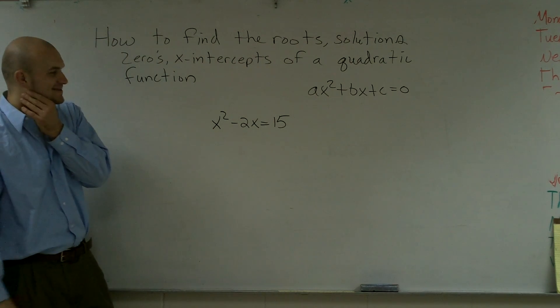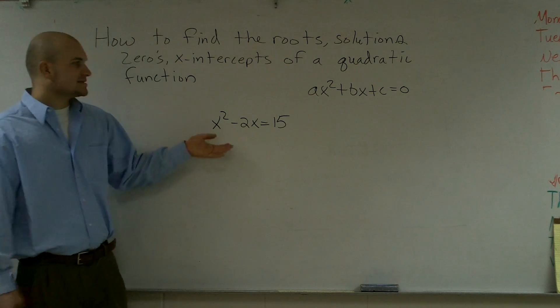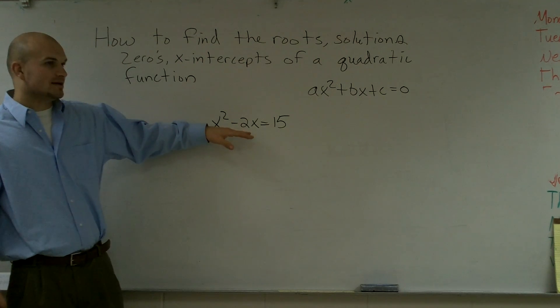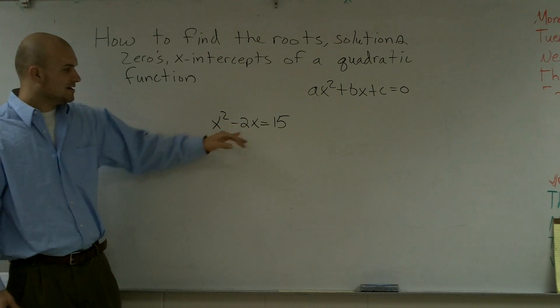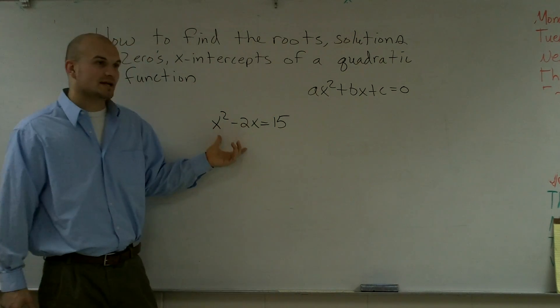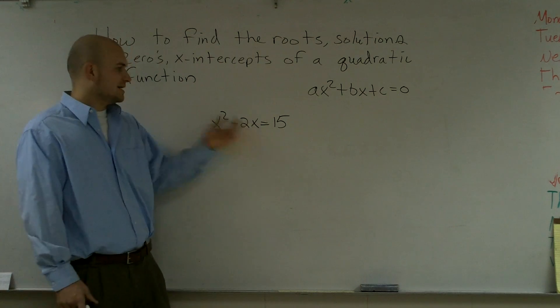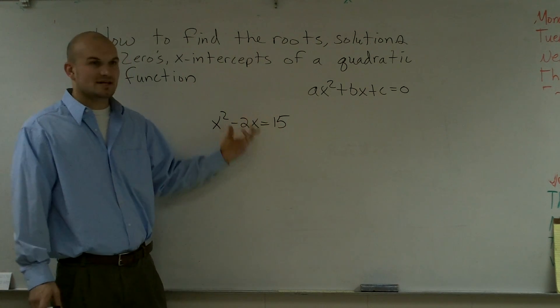So if we had x squared minus 2x equals 15, first thing I had to do if I'm going to factor this is, well, first of all, I see I could go ahead and take out an x here, but it's not in my format, and that's not really going to help me solve for my value of x. So if you took out an x, that's not really going to help you because it still has to equal 0.